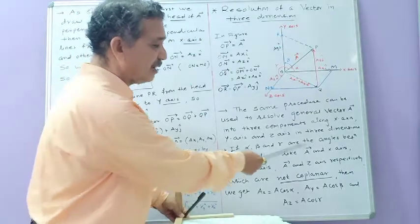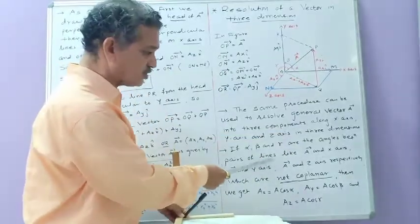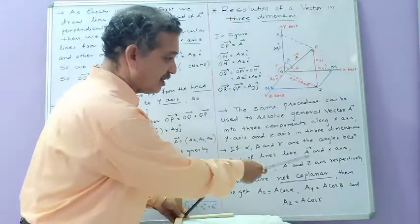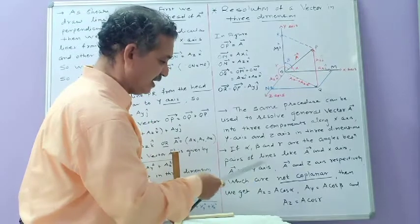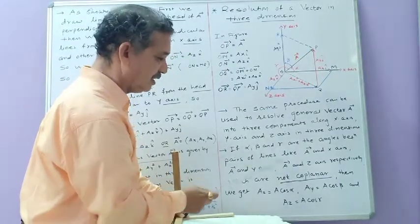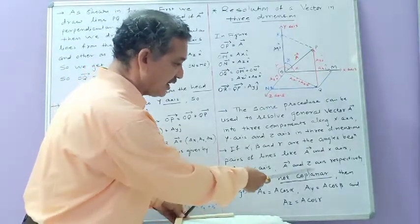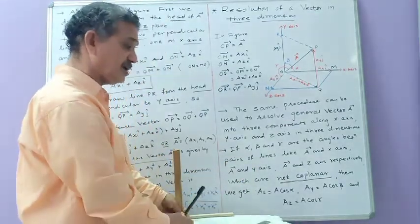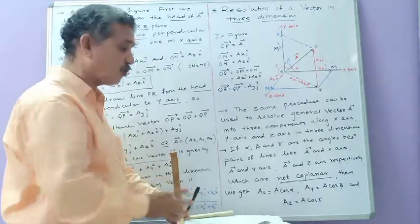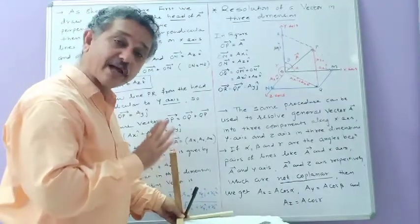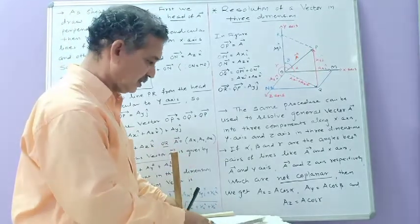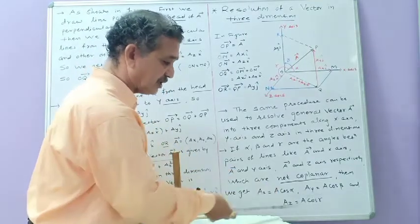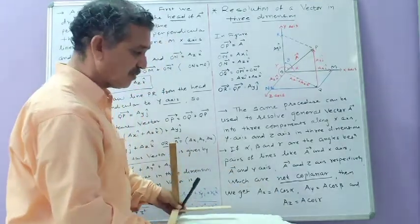Thus, if alpha, beta, and gamma are the angles between vector A and the x-axis, y-axis, and z-axis respectively — and remember, these three angles are not coplanar, meaning they do not lie in the same plane — then Aₓ equals A cos α, Ay equals A cos β, and Az equals A cos γ. These are the three scalar components.